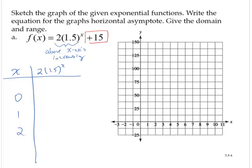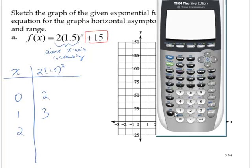If x is 0, 1.5 to the 0 is 1 times 2 is 2. If x is 1, 1.5 to the first power is 1.5. 2 times 1.5 is 3. If x is 2, we have 2 times 1.5 to the second. I could probably do this one on paper, but I'm going to go ahead and use the calculator. 2 times 1.5 to the second power is 4.5.